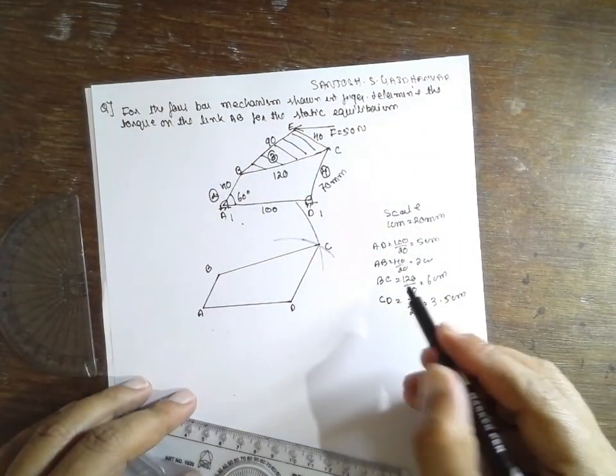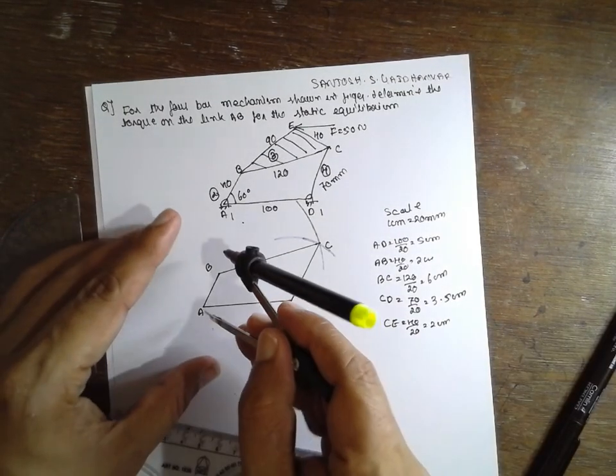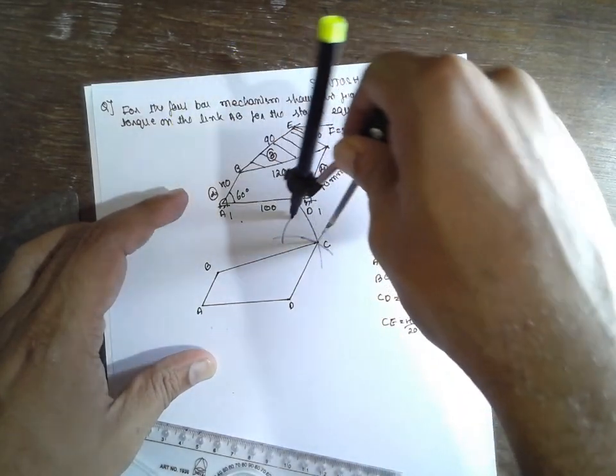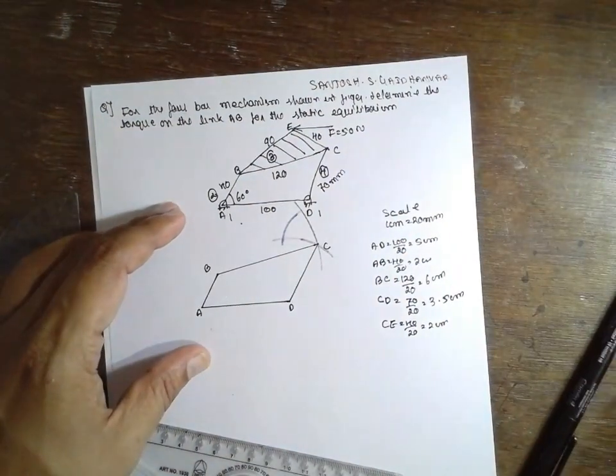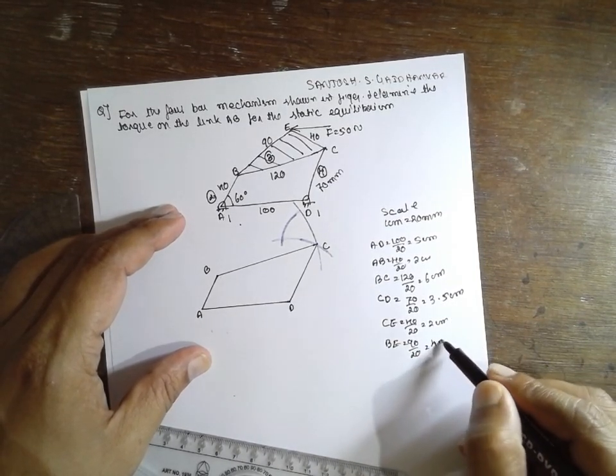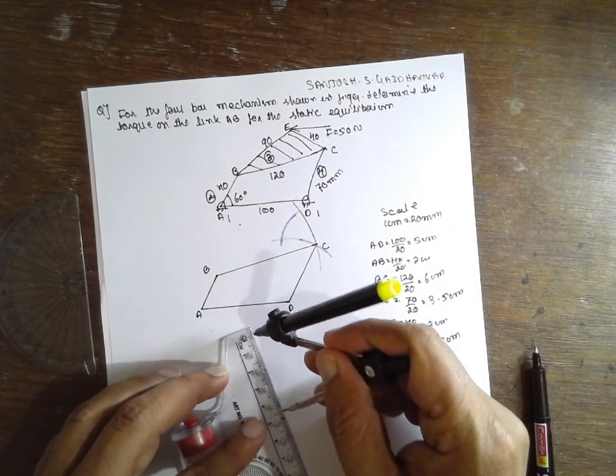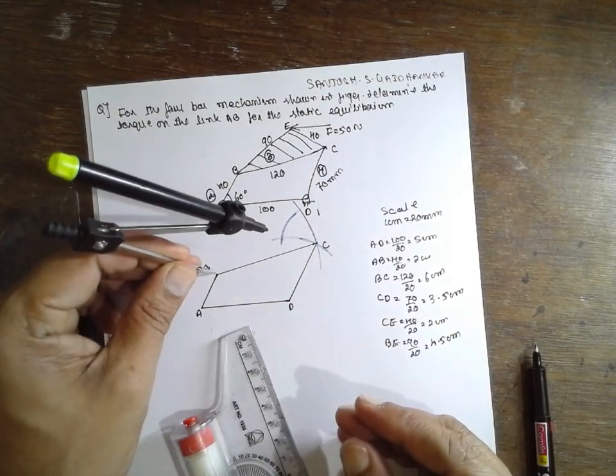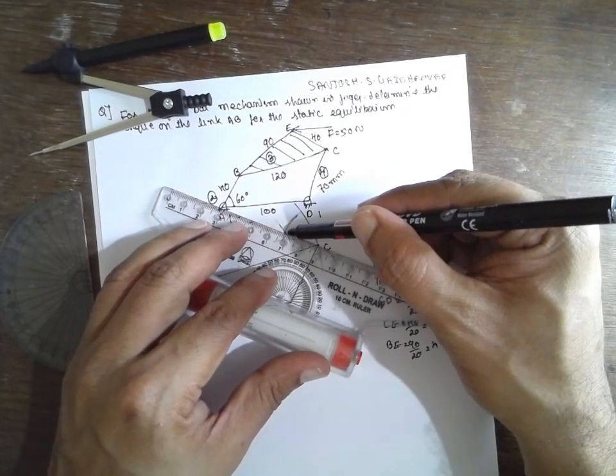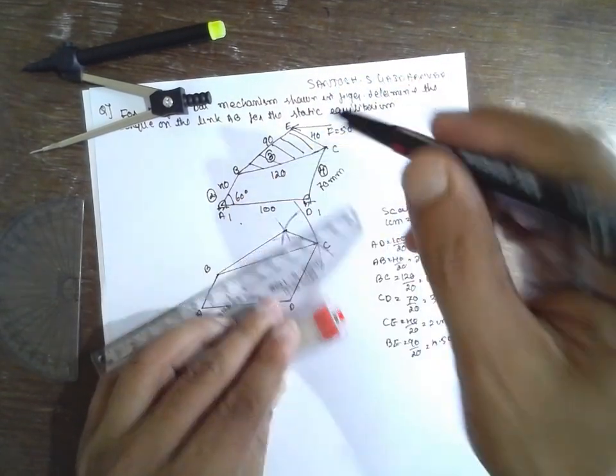Now C to E, CE is 40 divided by 20, nothing but 2 cm. BE is 90, 90 divided by 20 is nothing but 4.5 cm. This is E.